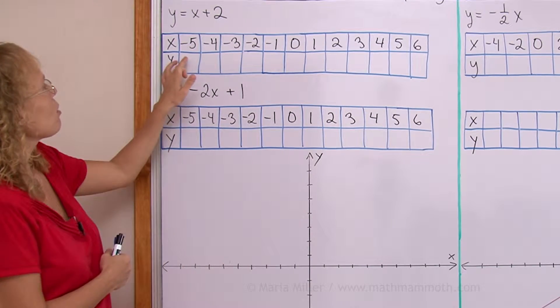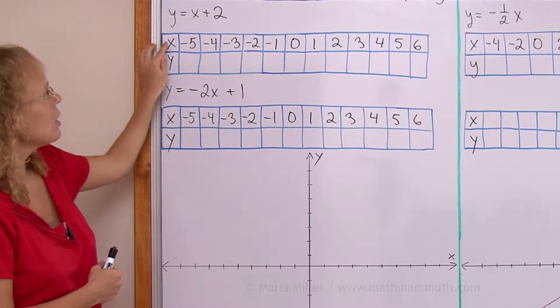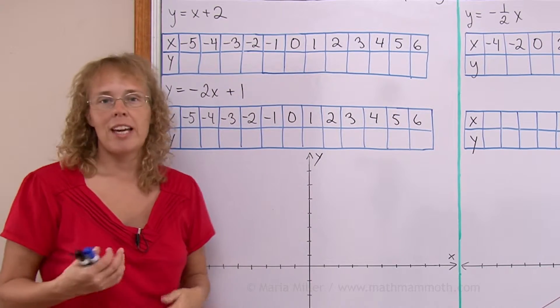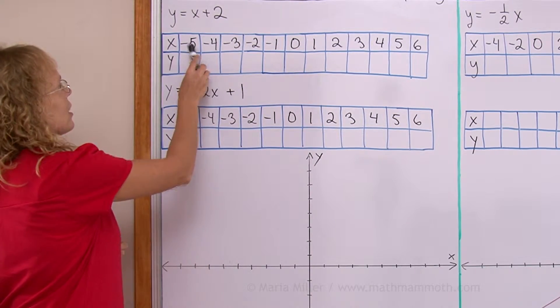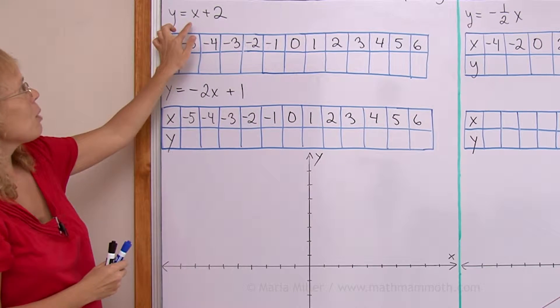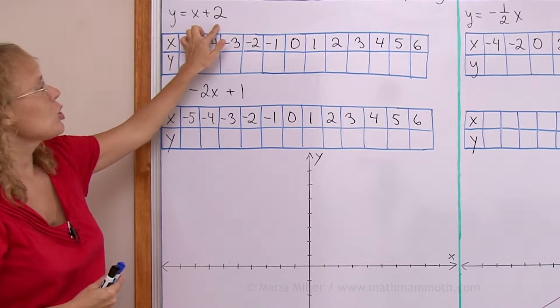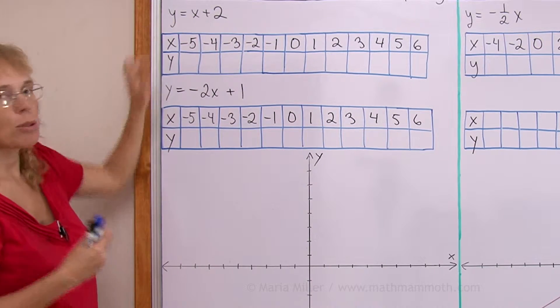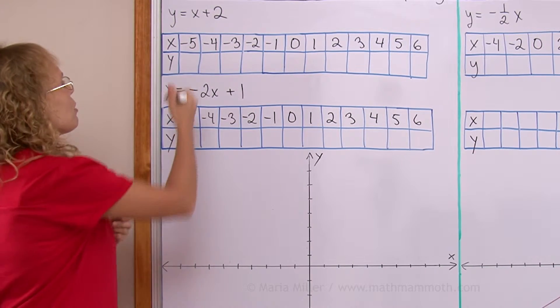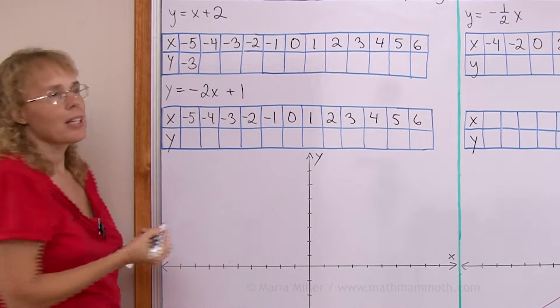Let us first look at this table here where I put many possible values of x. If x is negative 5, then I'll put negative 5 here in place of x. Negative 5 plus 2 is negative 3. That's what y would be, and then that would make that equation true.